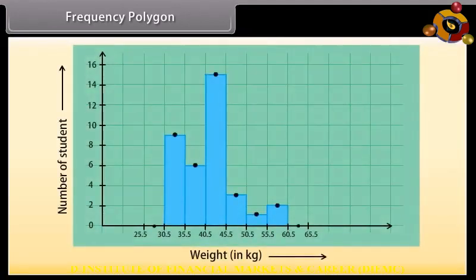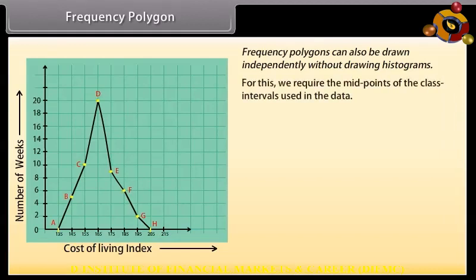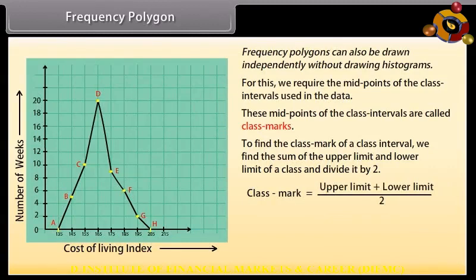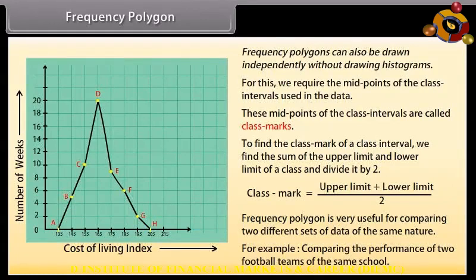Frequency polygon: In a frequency polygon, a line graph is drawn by joining all the midpoints of the tops of the bars of a histogram. Frequency polygons can also be drawn independently without histograms, using the midpoints of the class intervals, which are called class marks. The class mark equals the upper limit plus lower limit divided by two. Frequency polygons are very useful for comparing two different sets of data of the same nature, for example, comparing the performance of two football teams of the same school.